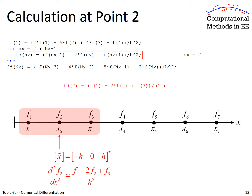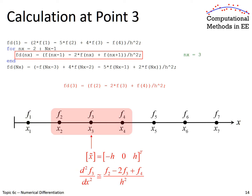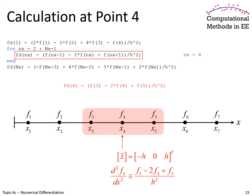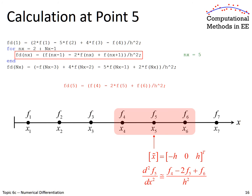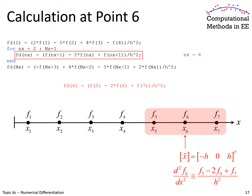At this point it becomes somewhat repetitive. We move over to point F3 — the same finite difference approximation is used, the only difference is our loop counter is now 3. Loop counter is 4, we evaluate the finite difference at position 4. Loop counter is 5, evaluating at the fifth position. This is the last iteration of the loop because big NX equals 7, and we're ending our loop at big NX minus 1. Since little nx equals 6, this is the last iteration — we evaluate the second-order derivative at point 6.